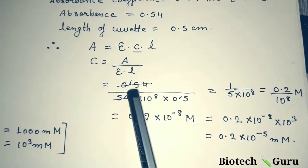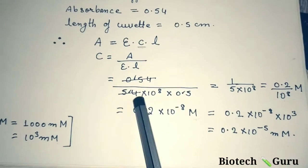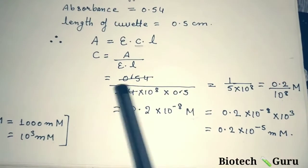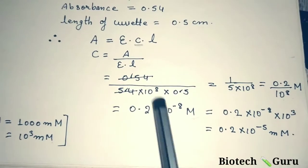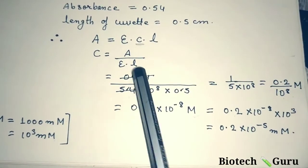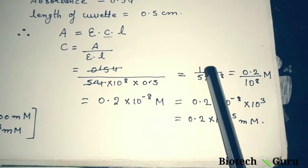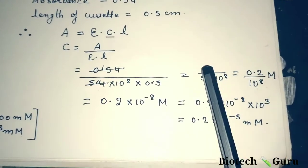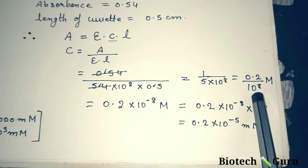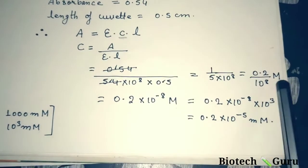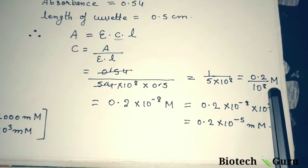Now let us substitute the values. A = 0.54, ε = 5.4 × 10⁸, l = 0.5. Both numerator and denominator have two decimal digits, so the decimals cancel. Both 54 values cancel as well. We get 1 / (5 × 10⁸). Converting 1/5 to decimal gives 0.2, and 10⁸ was in the denominator, so the answer is 0.2 × 10⁻⁸ moles. We never write the final result as a fraction, so we convert to standard form: 0.2 × 10⁻⁸ mole.